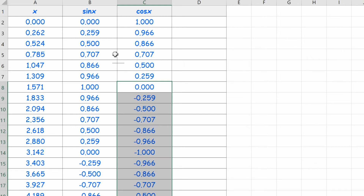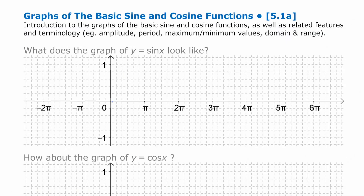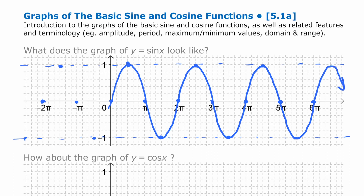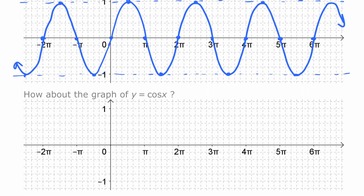Now we're going to look at how to make a quick hand-drawn sketch of each of those functions and summarize some of their main features. To draw the graph of sine by hand, we use some key points. We know it starts at 0, the maximum is 1, and the minimum is negative 1 — we'll put dotted lines there as guides. At 2 pi it's back at 0, at pi it's at 0, halfway between the first two it's up at the top, halfway between the second two it's down at the bottom. We continue that pattern, even into the negatives, and then trace the curve.